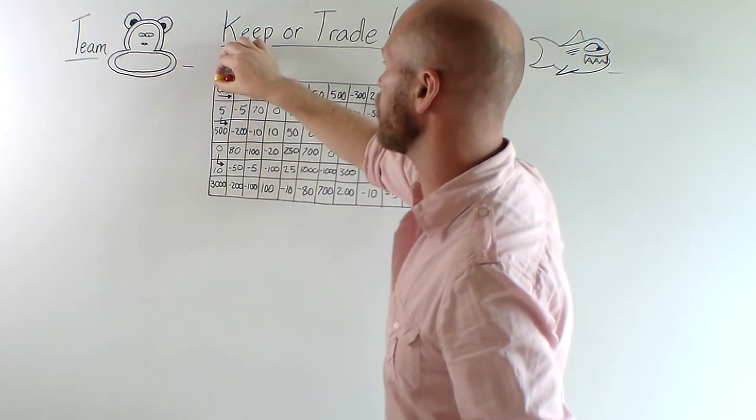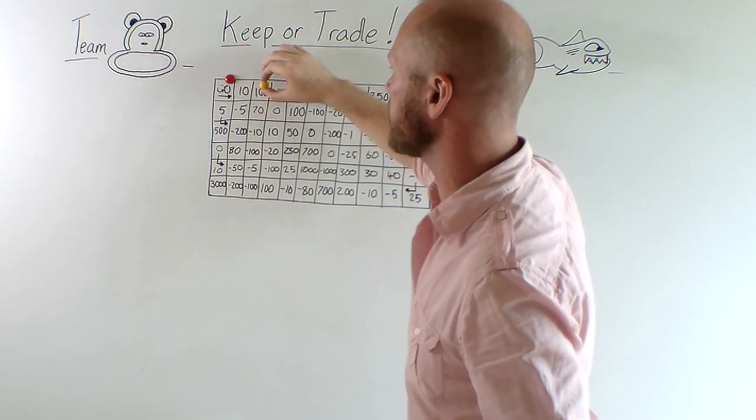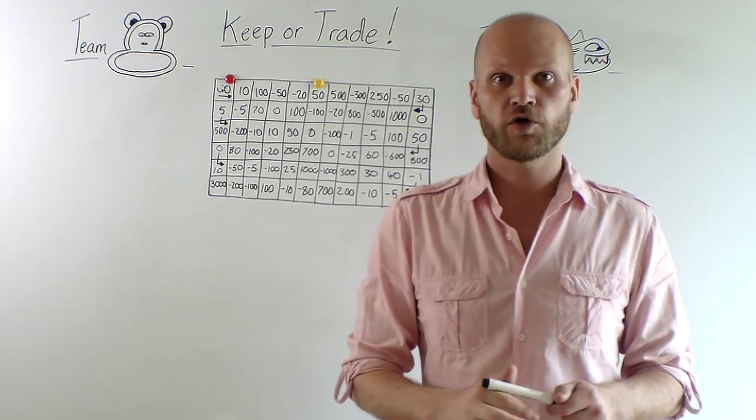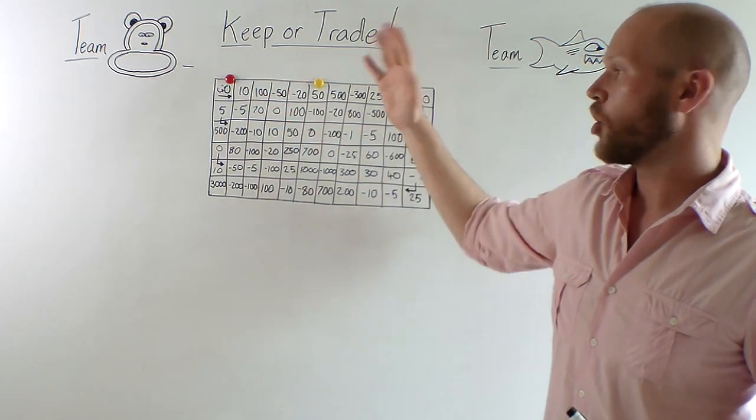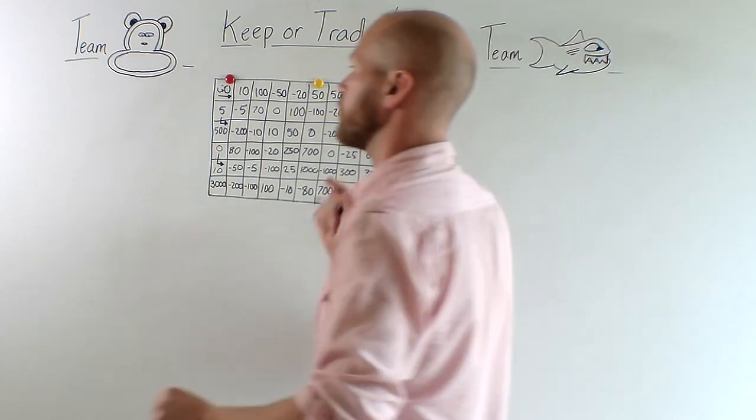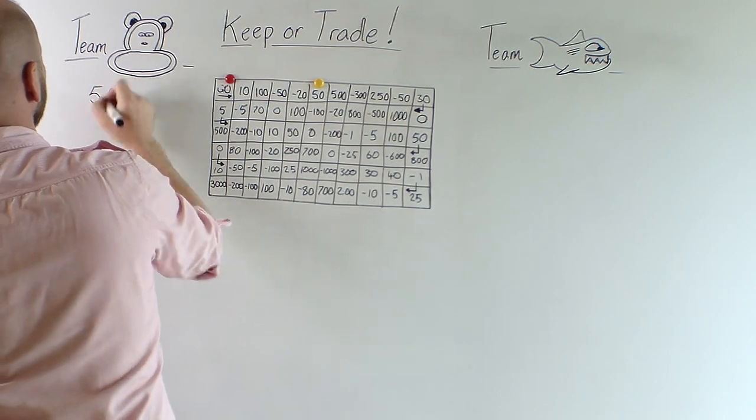How do we play? Team Monkey throws a 5. 1, 2, 3, 4, 5. So, 50. They can choose to keep or trade. 50, not too bad, so they keep. Team Monkey, yellow, 50.